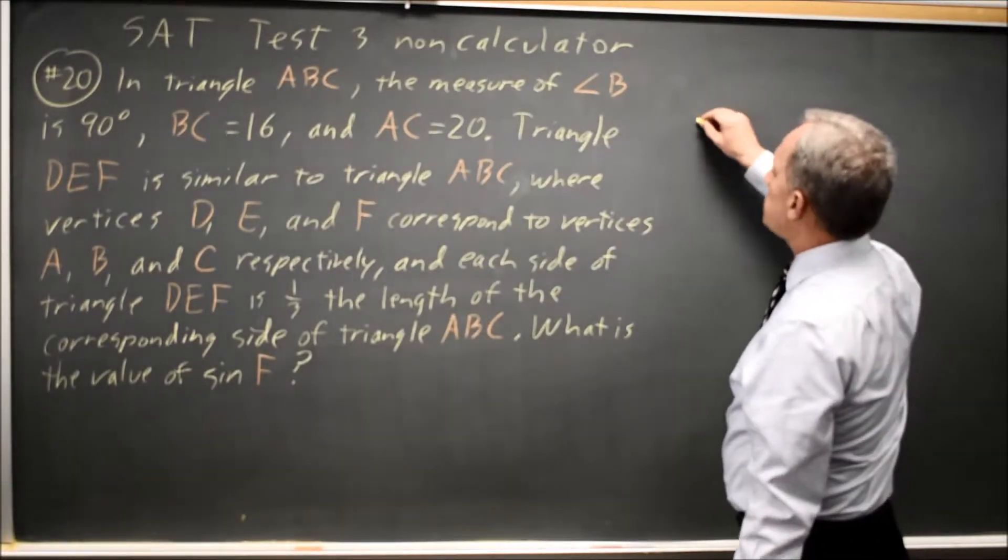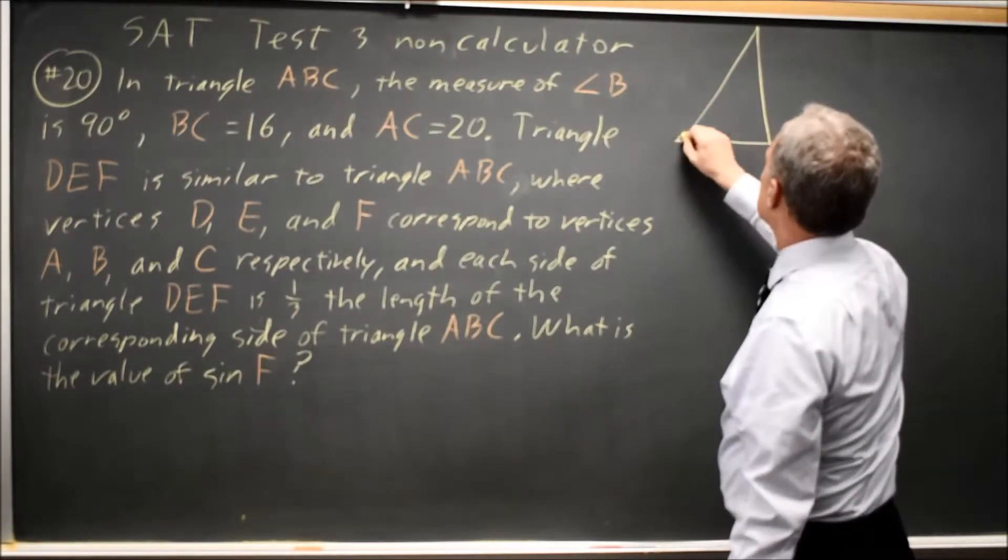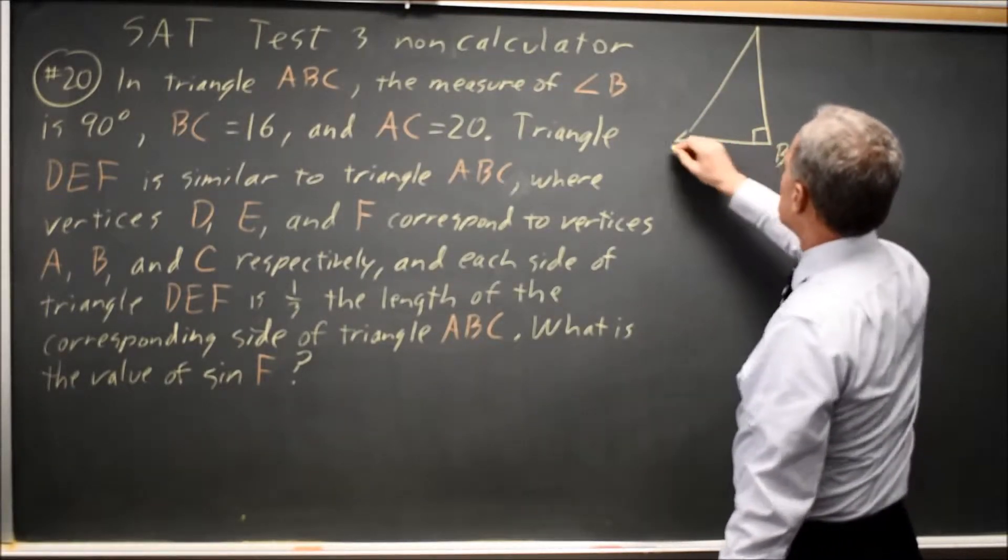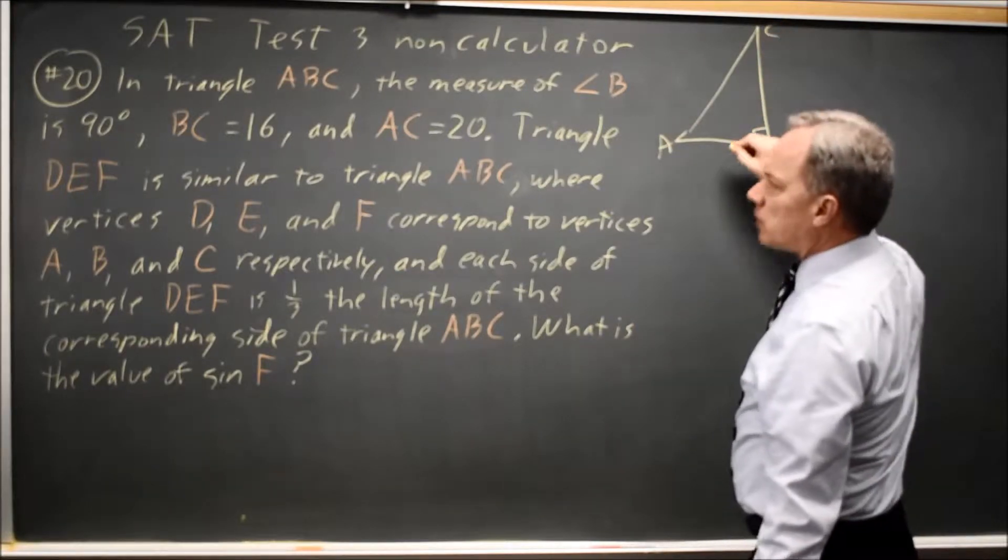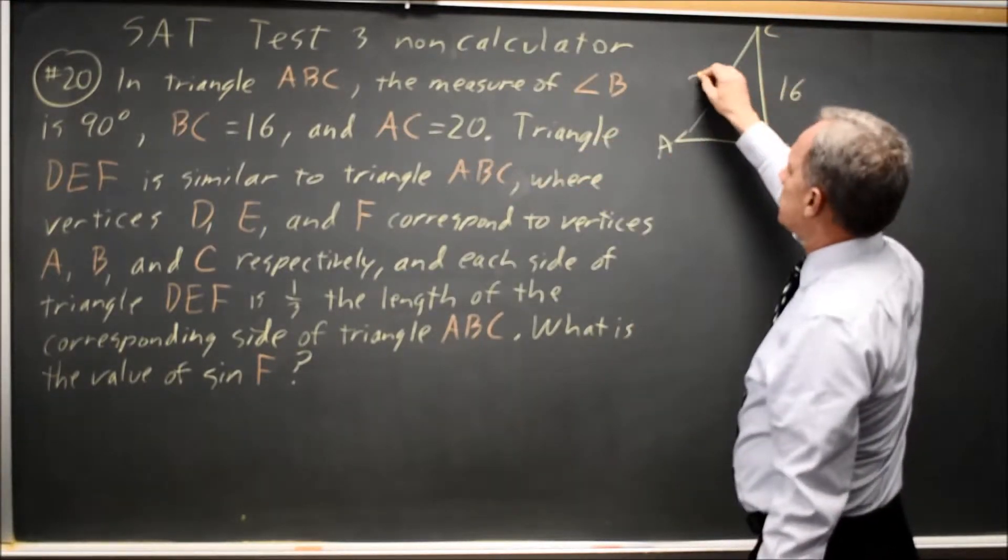Triangle ABC, angle B is a right angle. And BC equals 16, AC equals 20.